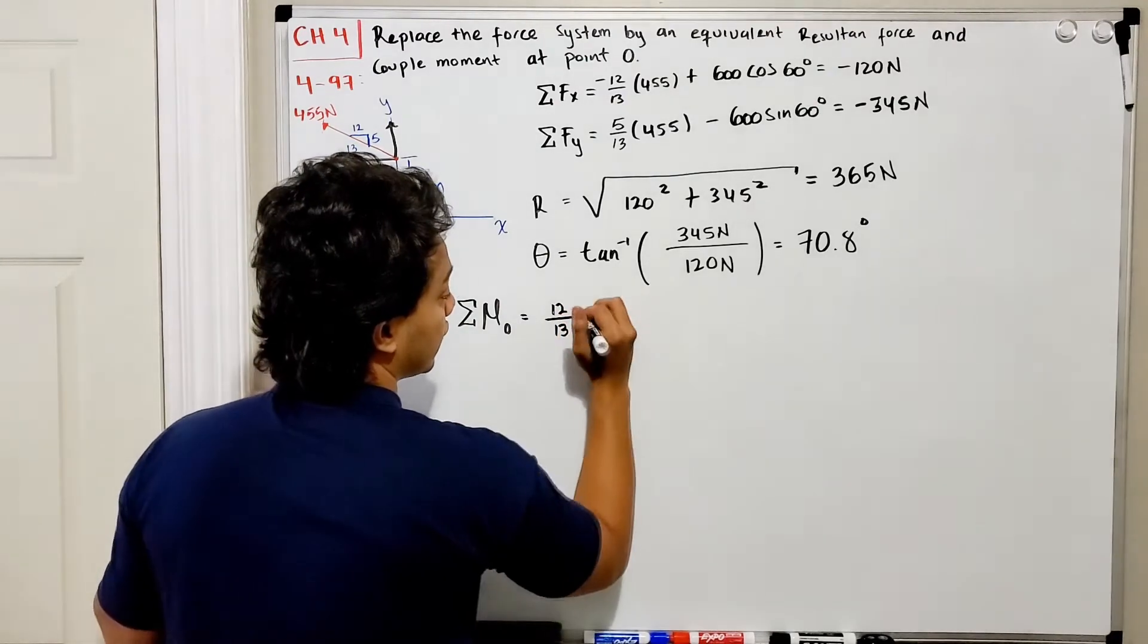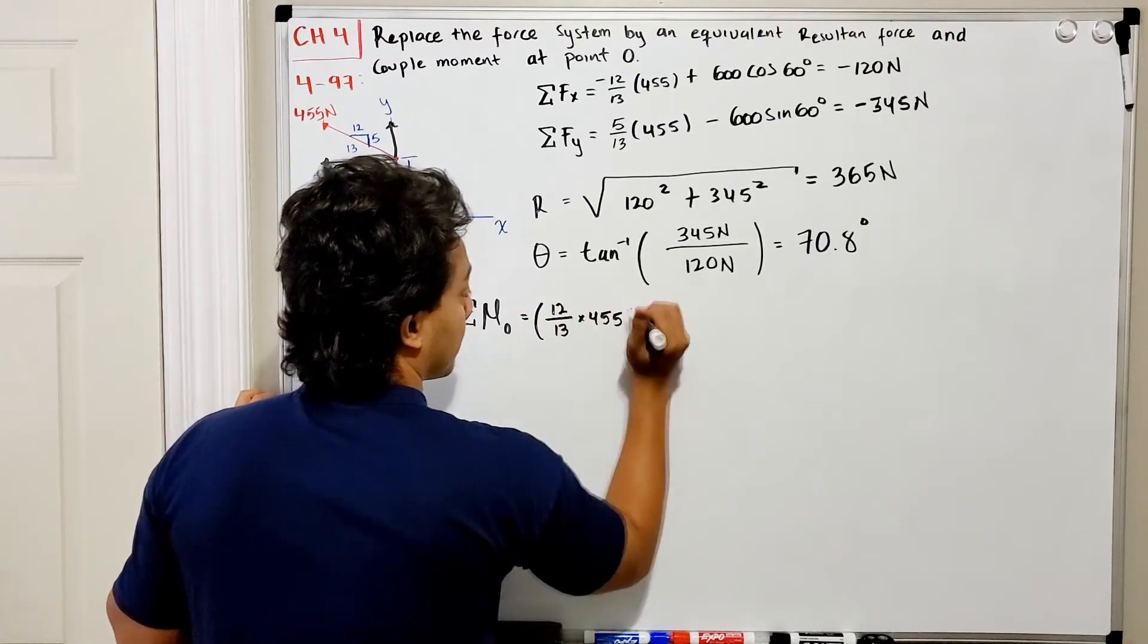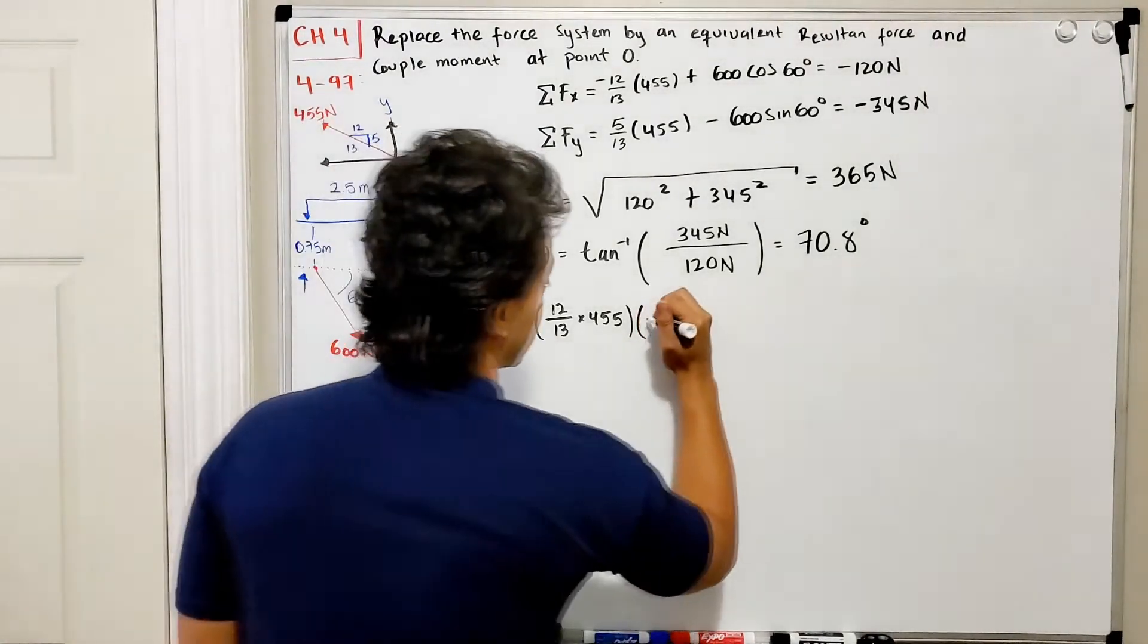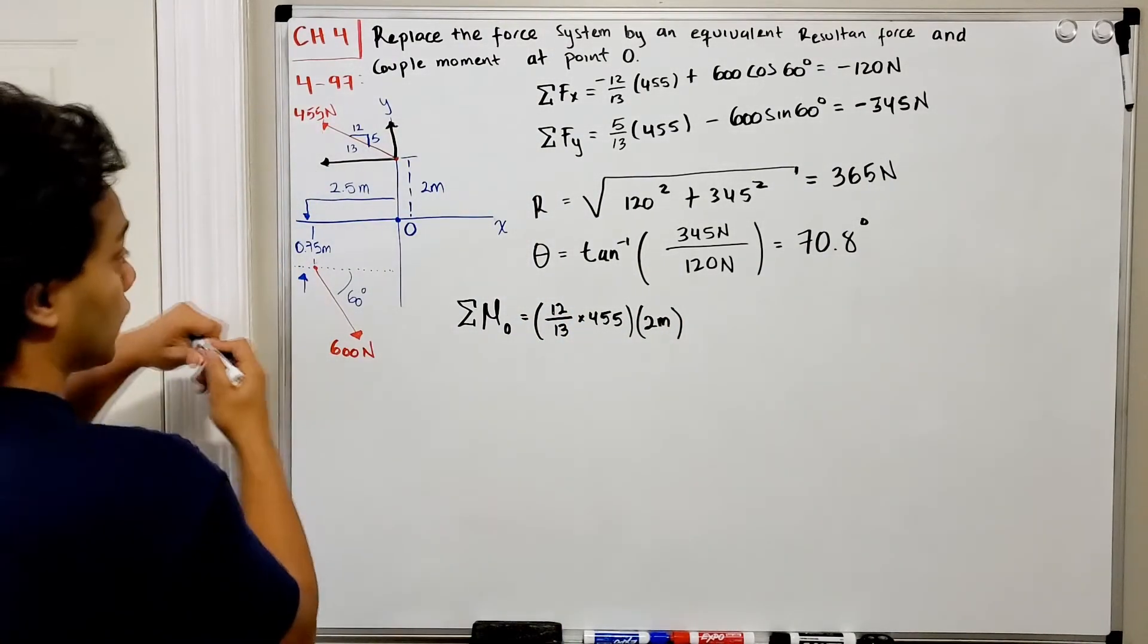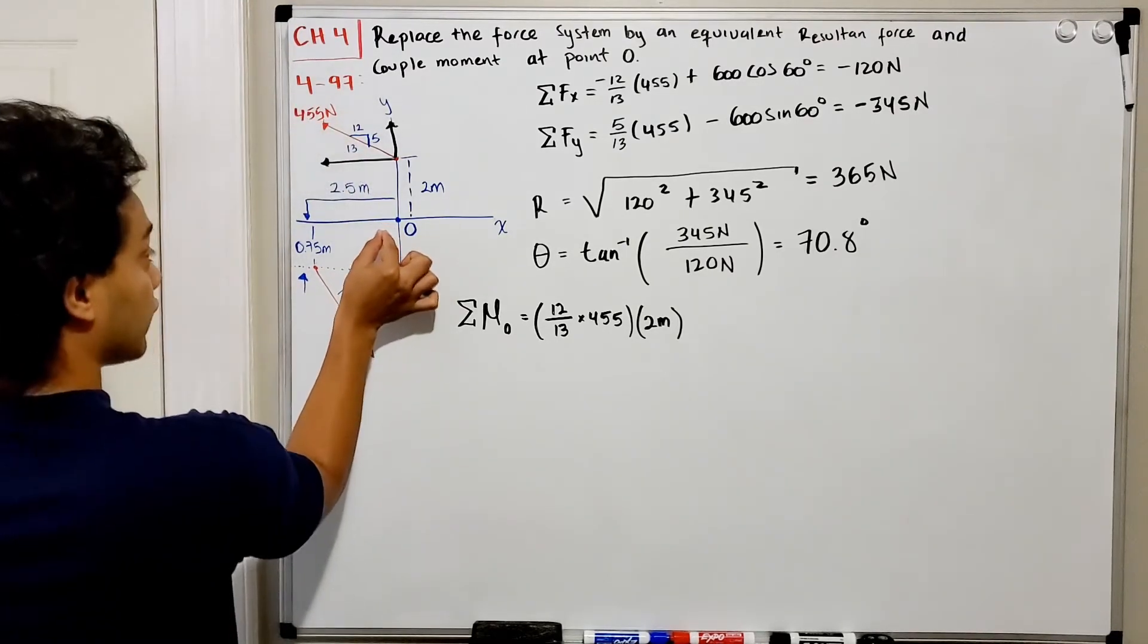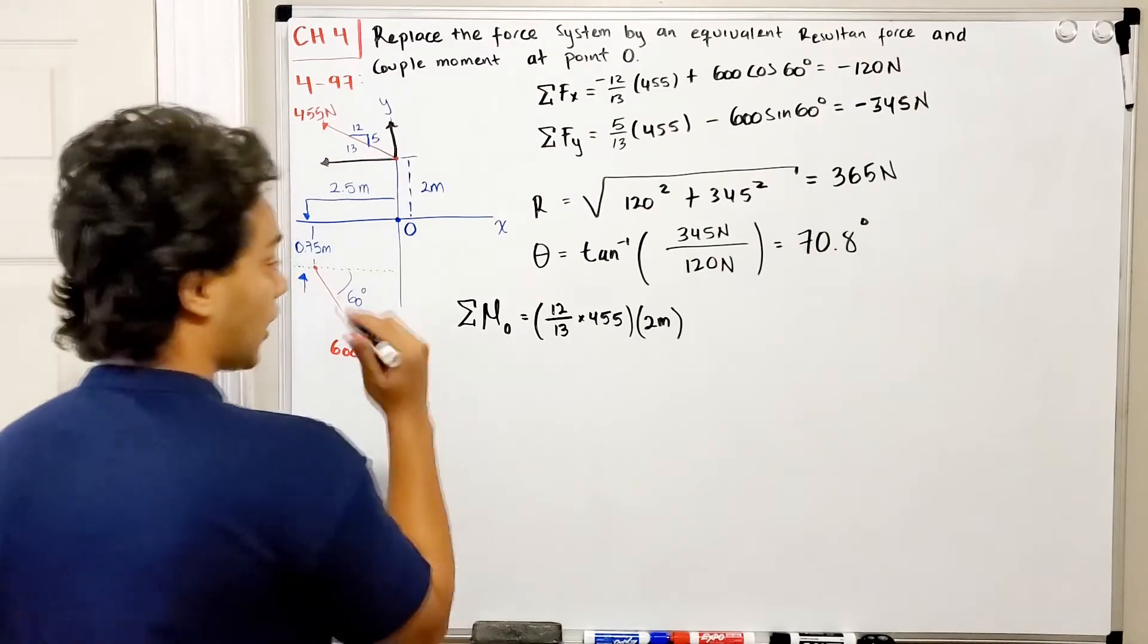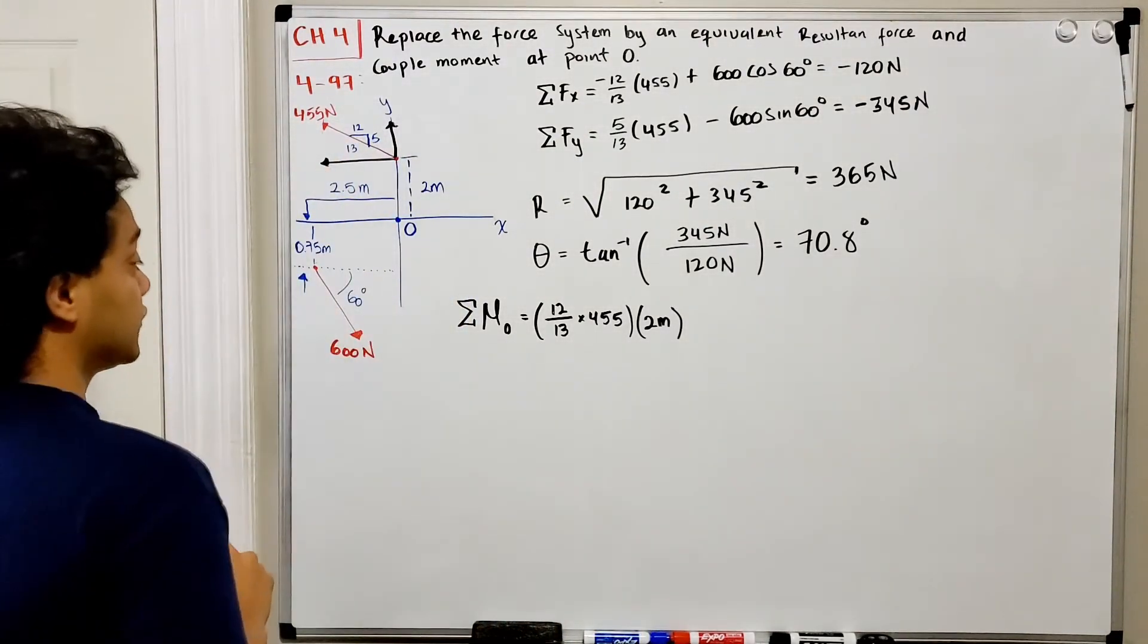How much am I going to the left? 12 out of 13 multiplied by 455. The distance is 2 meters, since moment is force times distance. What's the direction? If we hold at point O and pull from here to the left, the system rotates counterclockwise, so I define counterclockwise as positive. We're done with the first force.